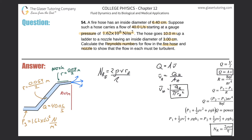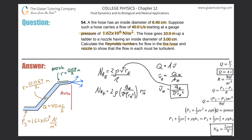Substituting the velocity expression into the Reynolds number formula gives: Reynolds number equals 2 times the density of water, times the flow rate Q divided by pi times the radius squared, times the radius — all divided by the viscosity. The radius squared in the denominator cancels with one factor of radius, simplifying the formula so we can plug in values directly.